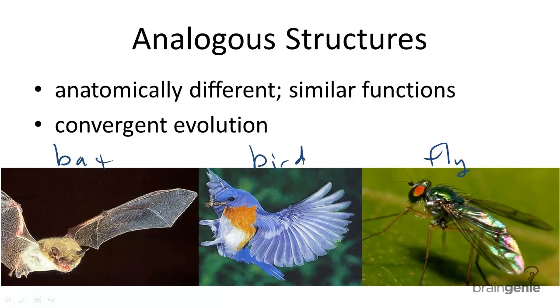In this lesson, we're going to learn what it means to have an analogous structure. We're going to give an example, and we're going to discuss why these structures are important to understanding evolution.